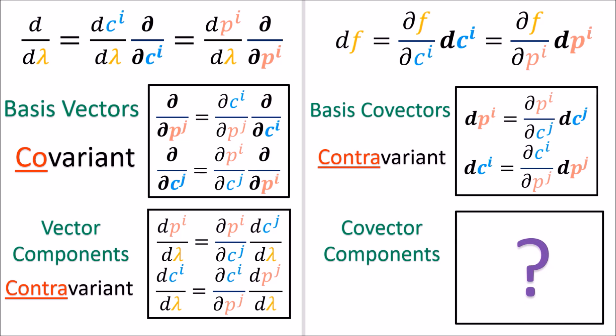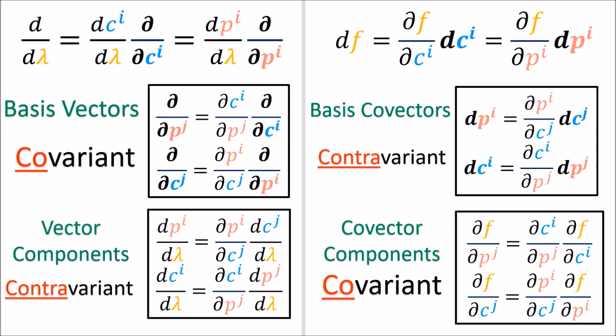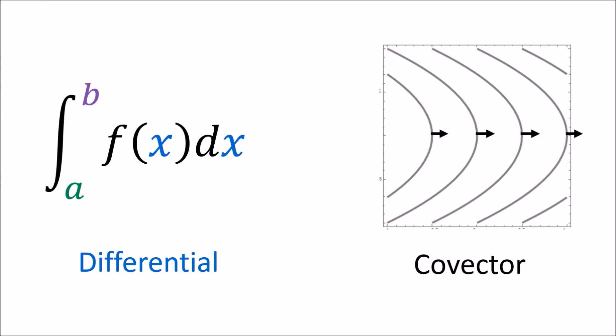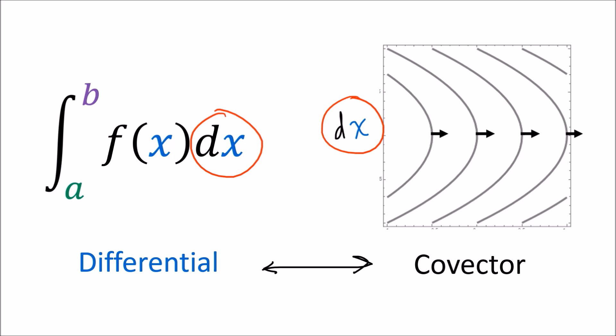We can now fill in the last box with the covariant transformation rules for converting between co-vector field components. This marks the point where we've figured out everything we need to know about vector fields and co-vector fields as seen in calculus. We've spent the last three videos working out everything about co-vector fields, including how to get their components and the transformation rules they follow. In the next video, we're finally going to complete the link between the co-vector field interpretation of dx and the differential interpretation of dx that we see in integrals, by reinterpreting what integration means.